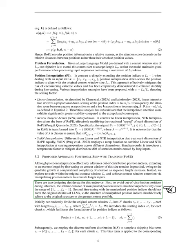There are two main goals. First, we want to avoid out-of-distribution positions during inference, so we need to ensure the relative distance of manipulated position indices covers the range from 1 to the target length minus 1. Second, we want to ensure that fine-tuning with the manipulated position indices doesn't harm the original abilities of the language model, so we keep the structure of the manipulated position indices as close to the original as possible.